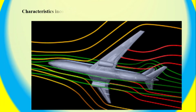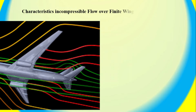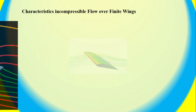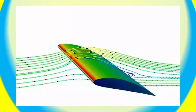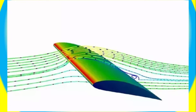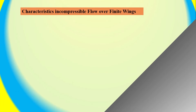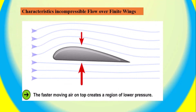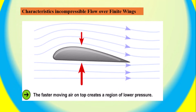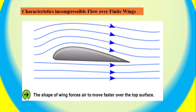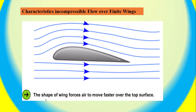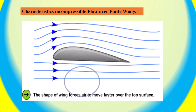In incompressible flow over finite wings, the fluid flows smoothly over the surface of the wing, creating a layer of low-pressure air on the top surface of the wing and a layer of high-pressure air on the bottom surface. This creates lift, which is the force that opposes the weight of the wing.